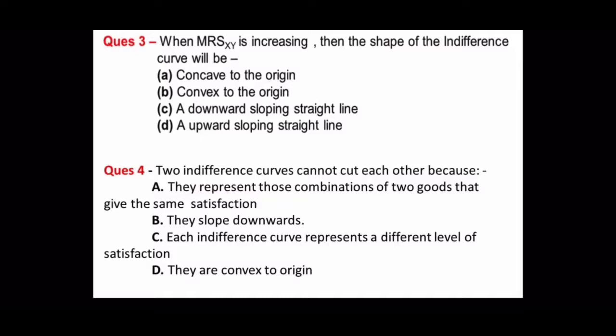Question number 4: Two indifference curves cannot intersect each other because? This is one of the properties we had to read about IC, that IC curves do not intersect. Because the higher IC is more satisfaction, the lower IC is less satisfaction. So if we mix the two ICs and they intersect, how do we know which is more satisfaction, which is less satisfaction? The transitivity rule will be lost. So the answer here is C, each indifference curve represents a different level of satisfaction.